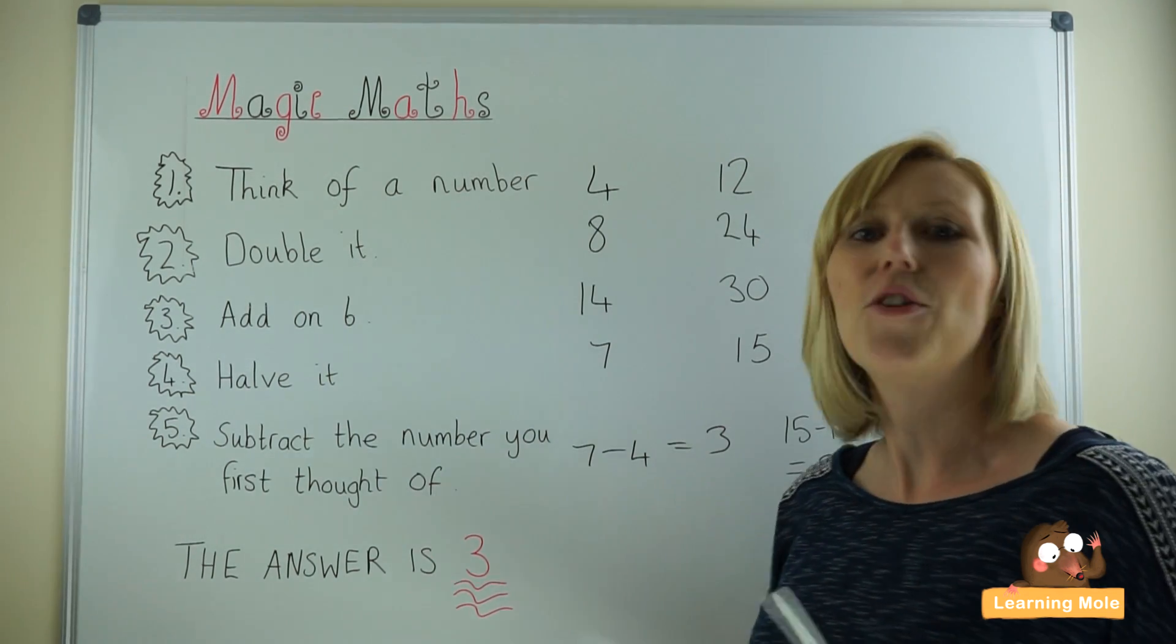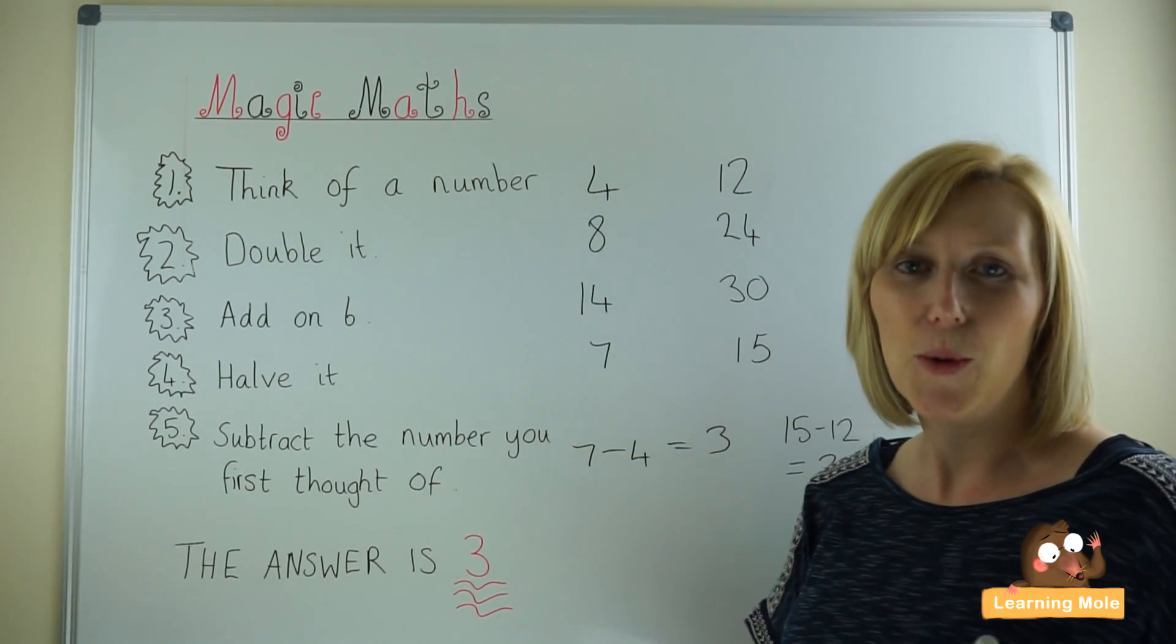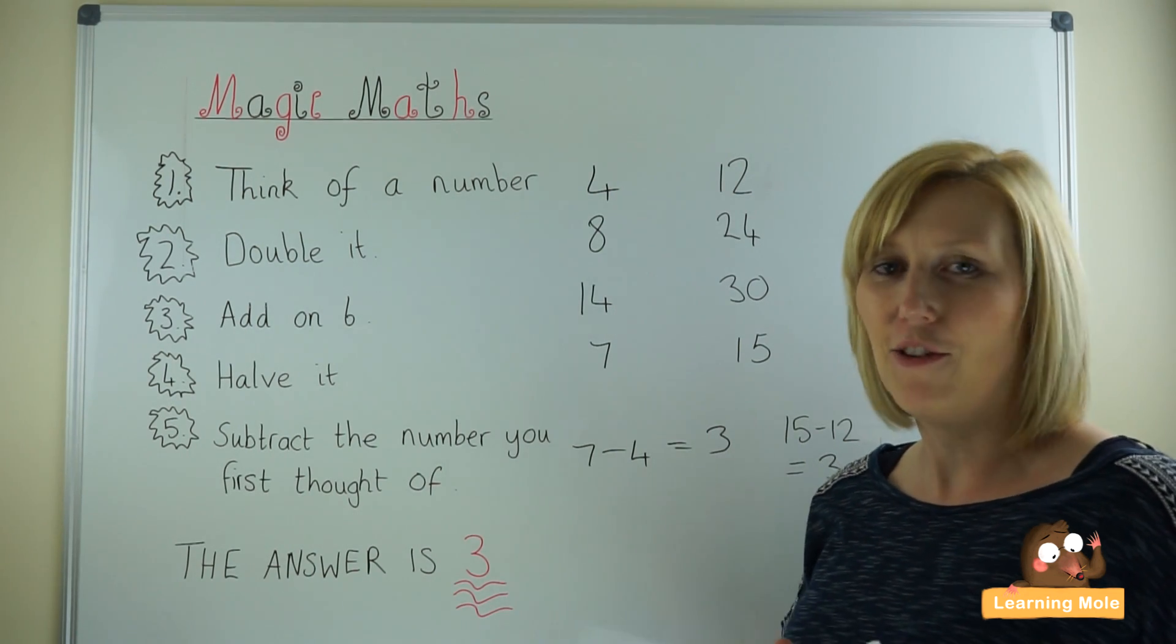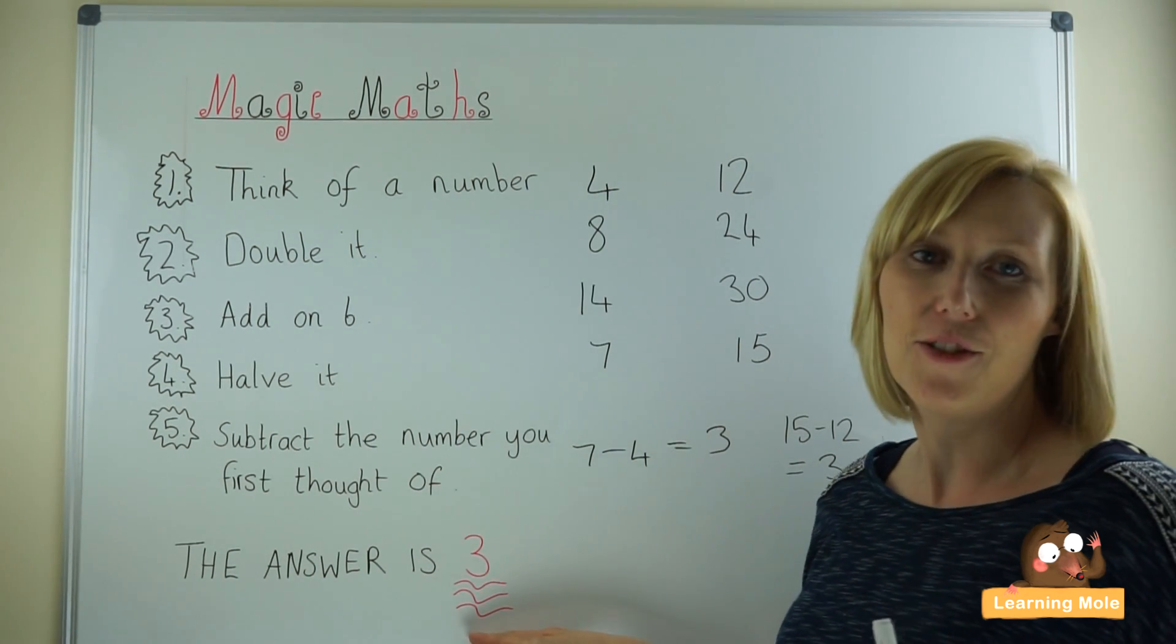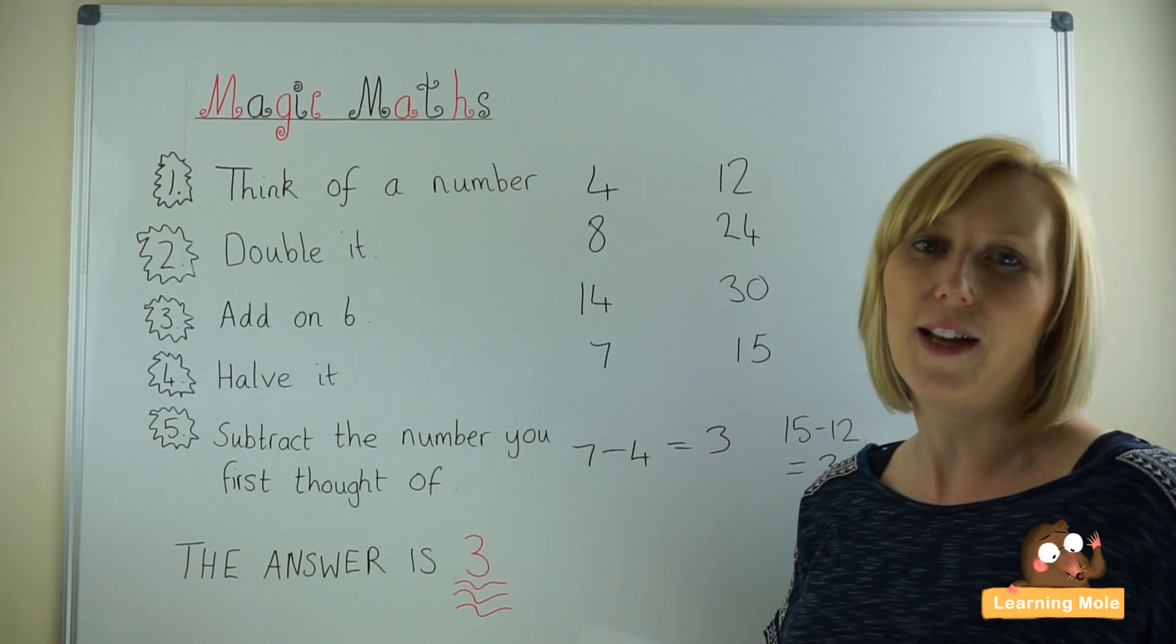This is now where you allow your child to test you. So get them to use the formula to ask you and work through the steps. Once they become confident asking you a few times and they keep getting through the answer 3, they realize that this really is magic maths and they can then take this strategy.